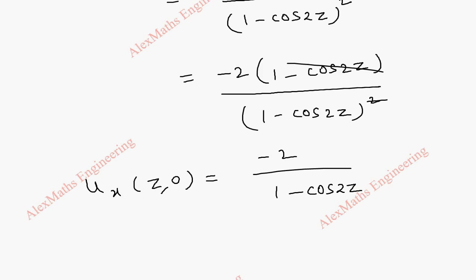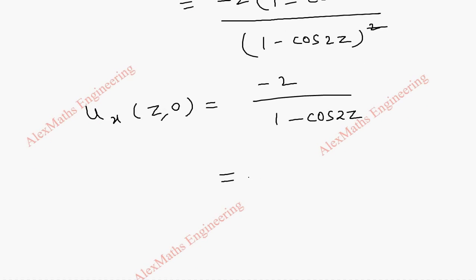And we can also further simplify this by using the trigonometric formula. 1 minus cos 2z is 2 sin square 2z by 2 which is 2 sin square z. After cancelling this we can carry this to the numerator which is minus cosecant square z. So this is our u_x of z comma 0.